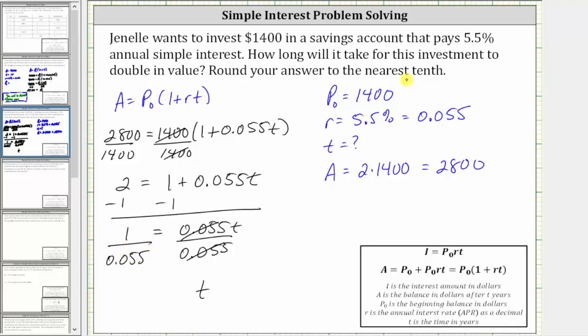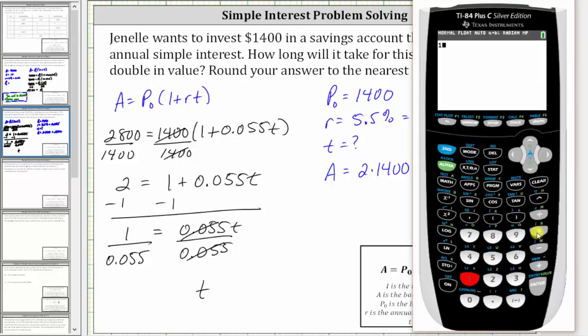And we are told to round to the nearest tenth. One divided by 0.055. When rounding to the tenths place value, because of the eight in the hundredths, we round up. T is approximately 18.2.